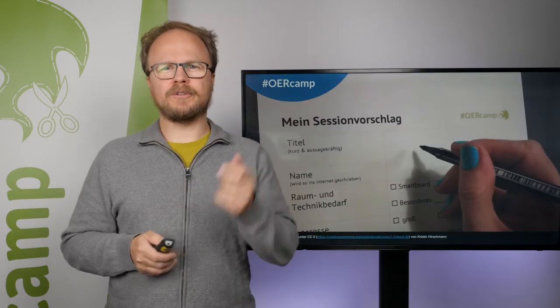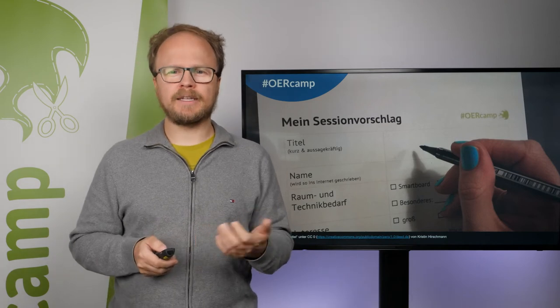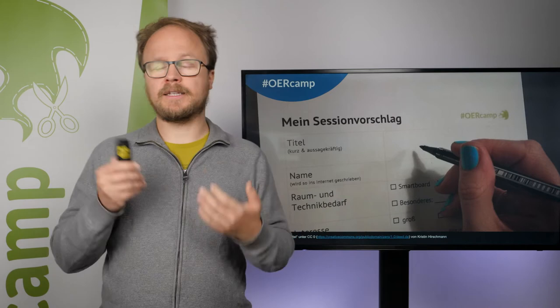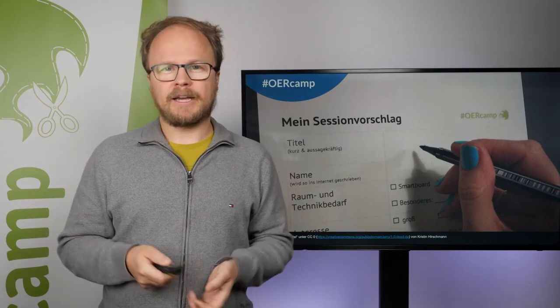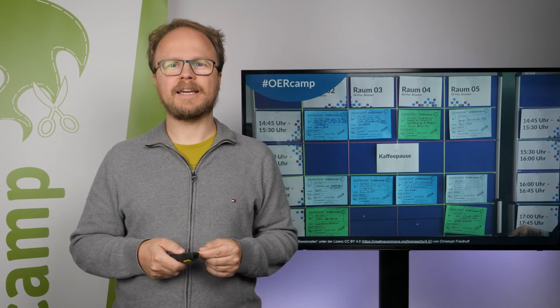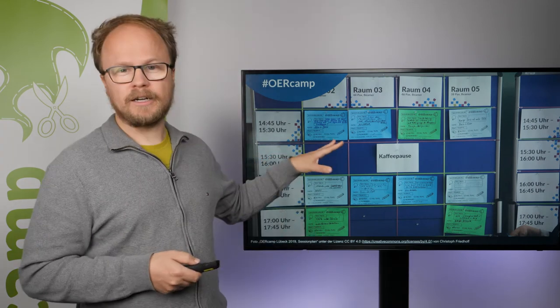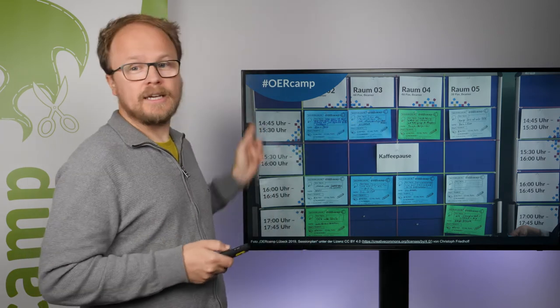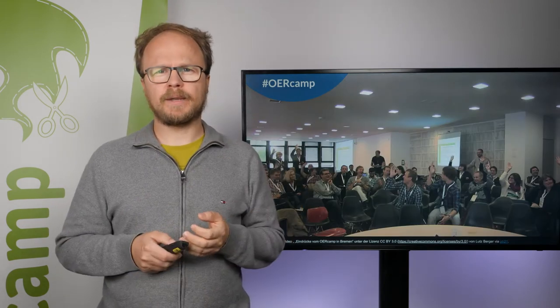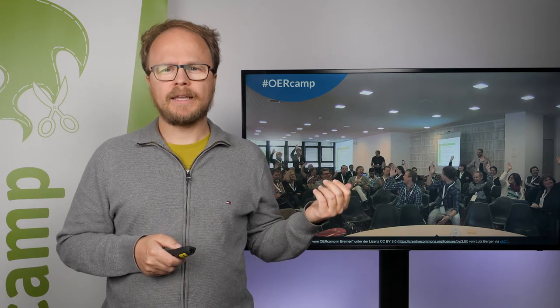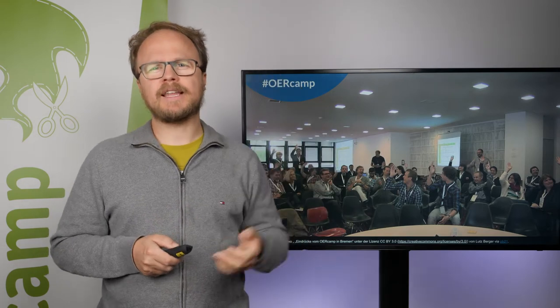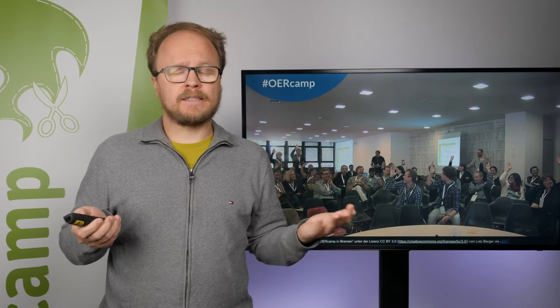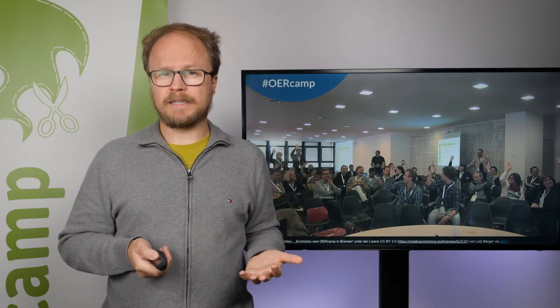You just put in the title for your session and your name, and we organize it so you can choose whether you need a projector, people sitting in a circle, or something else. You can do it digitally or on a pinboard. You then have a schedule with different rooms and different time slots. This is a picture from the first OERcamp in Bremen — the morning meeting, where you can see people raising their hands to indicate interest in a session.